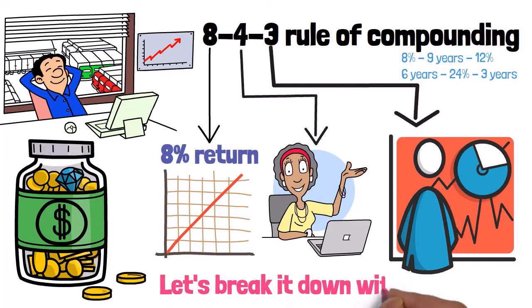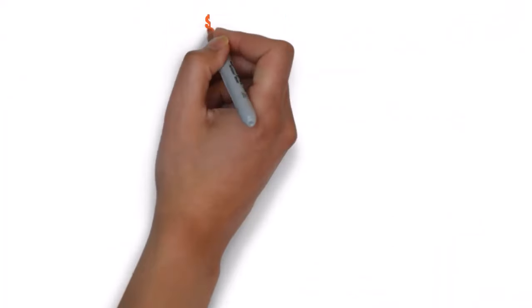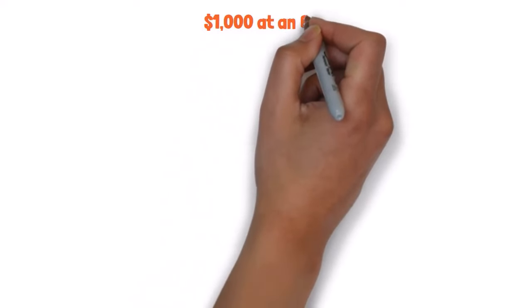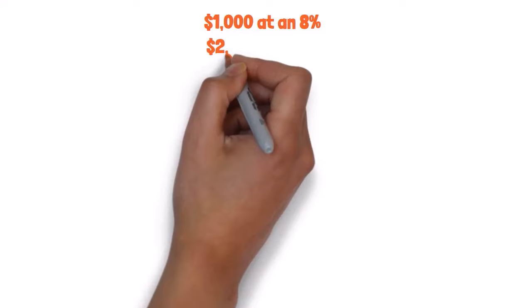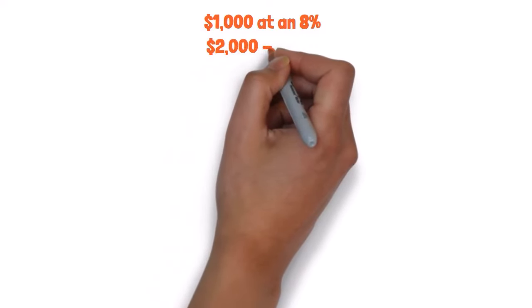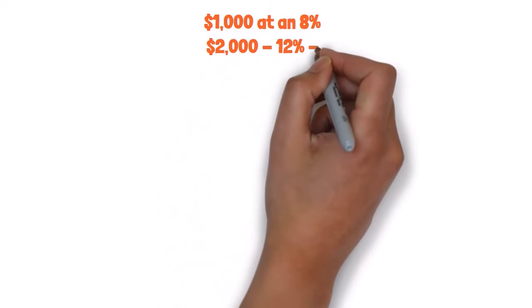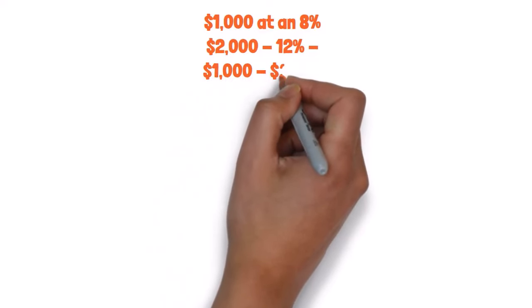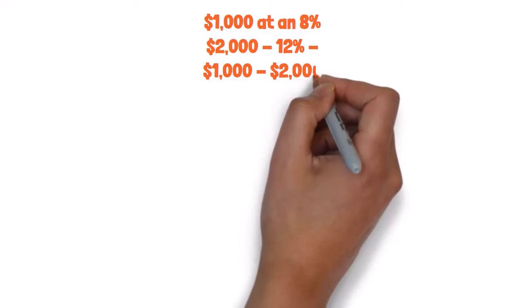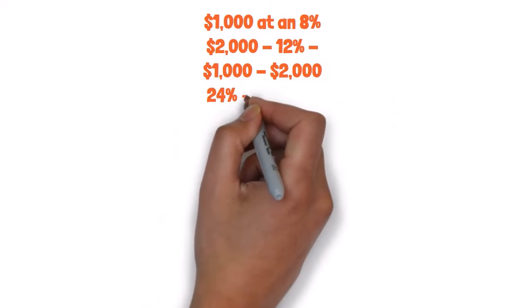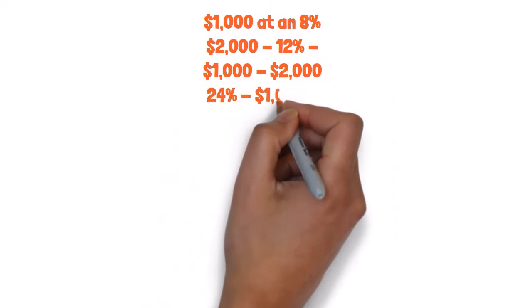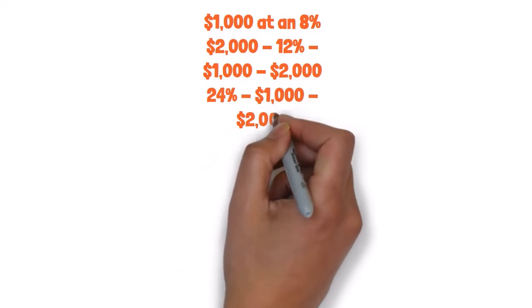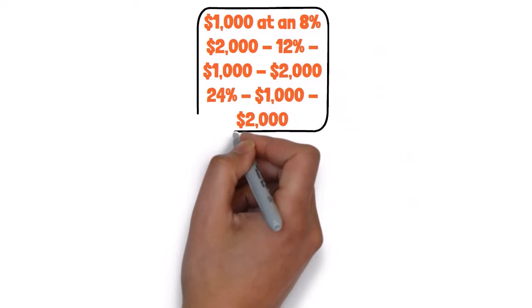Let's break it down with an example. Say you invest $1,000 at an 8% annual return. After 9 years, your investment will have doubled to $2,000. But if you manage to achieve a 12% yearly return, that same $1,000 will double in just 6 years turning into $2,000. And if you are able to achieve a 24% annual return, your $1,000 investment will double in a lightning fast 3 years, ballooning to $2,000.